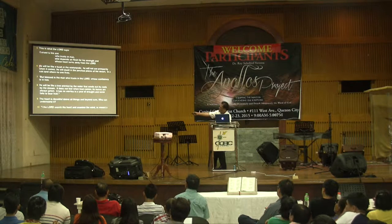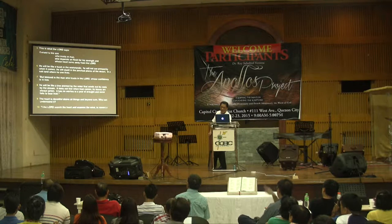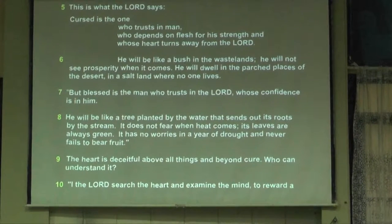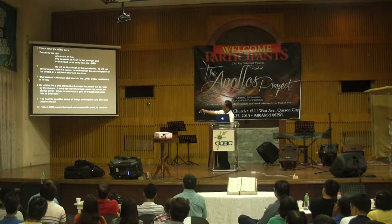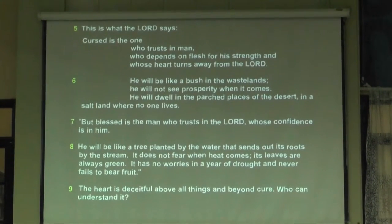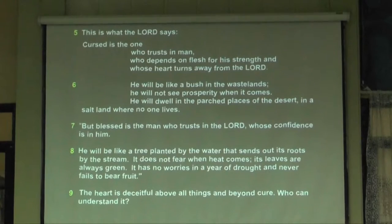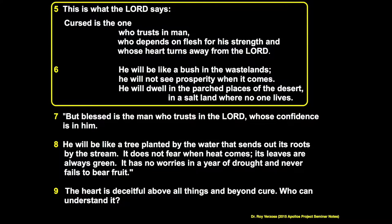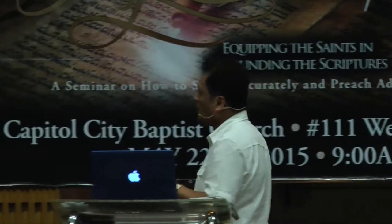Verse 6: 'He will be like a bush in the wastelands' — that's a simile, figurative language. The subject 'he' still refers to the cursed one. Then 'he will not see prosperity when it comes' and 'he will dwell in the parched places of the desert.' Then notice the preposition 'in' appears again — 'in a salt land.' You put the second preposition under the first. That's parallelism — one place described in two ways. If you erase the first description, you can replace it with the second — same place, described differently.